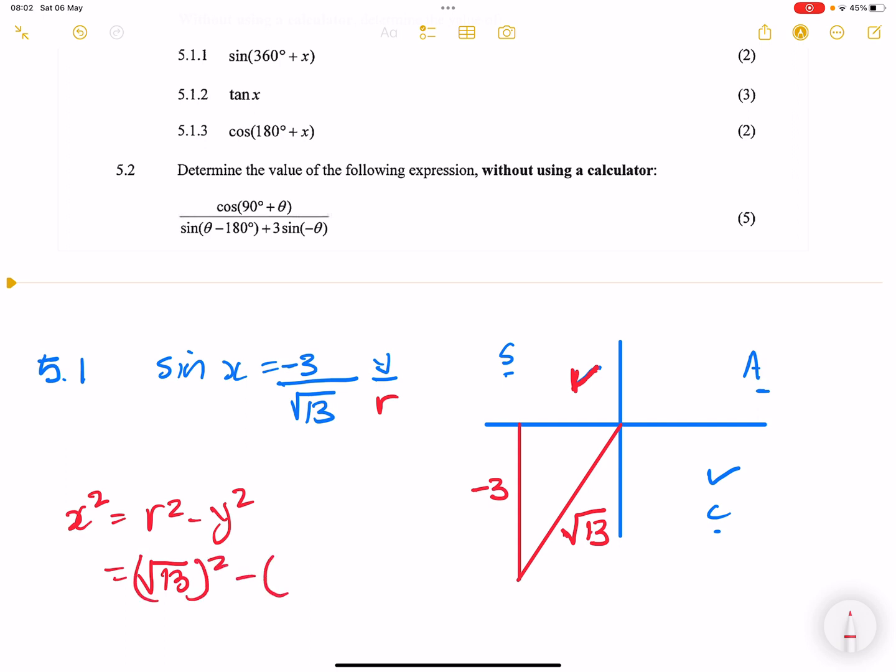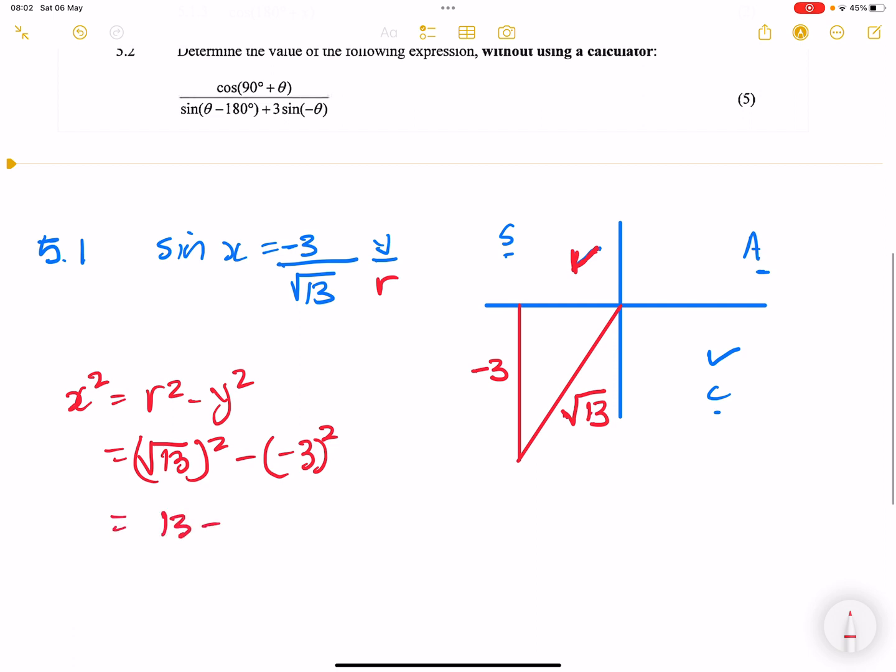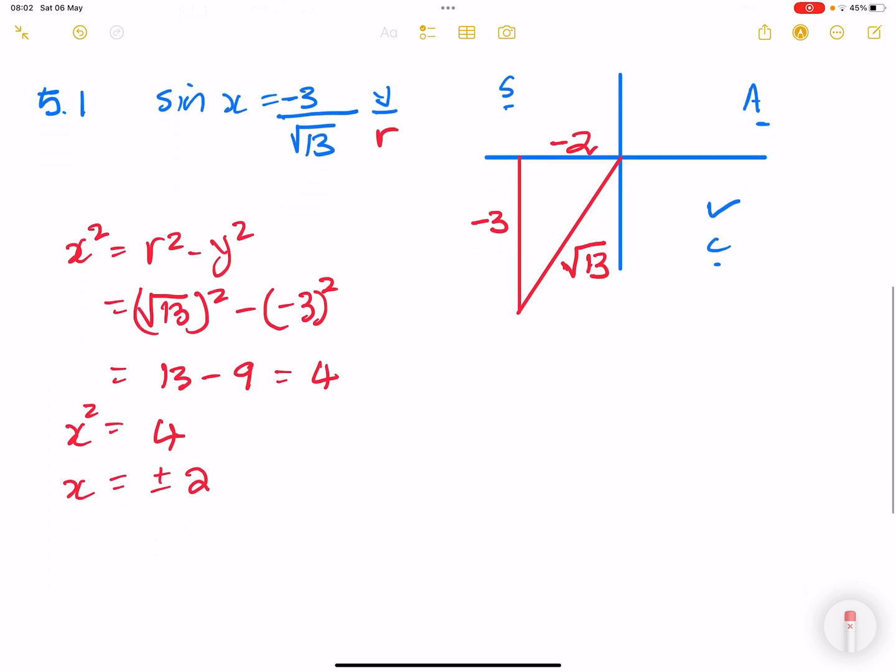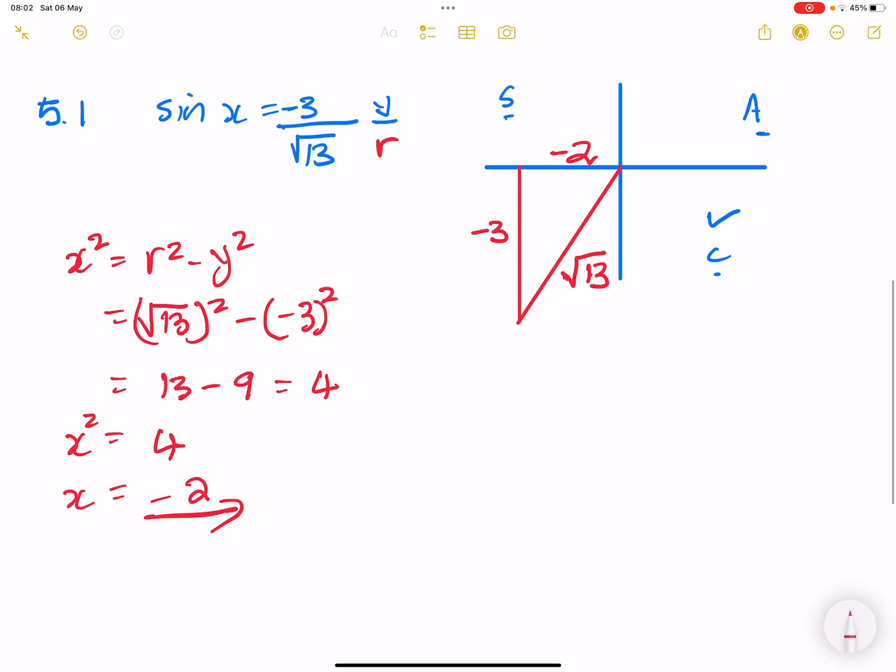We know x² is going to be r² - y². So this is √13 squared minus our y value, -3 squared. So this is 13 - 9, that gives us 4. And of course x should be ±2. To get the value of x, we take the square root of 4. Now note, ladies and gents, you still need to check: is it negative or positive? It will definitely be negative on your triangle. So we take the solution where x = -2 because that's what happens in the third quadrant.